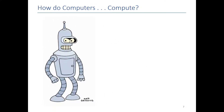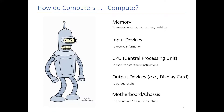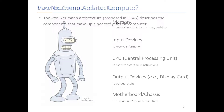Computers are very much the same way. They also have memory to store algorithms, instructions, and data. They have input devices to get the information. They have a CPU which acts as their brain. They have output devices to expose results to the world. And then their motherboard is the thing that holds all of that stuff in one place.